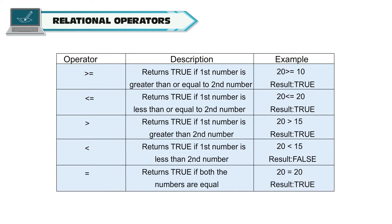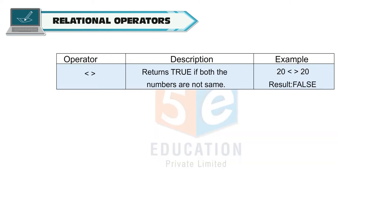Equal (=) returns true if both numbers are equal — so 20 = 20 is true. The not-equal operator (<>) returns true if both numbers are not the same — for example, 20 <> 20 is false.